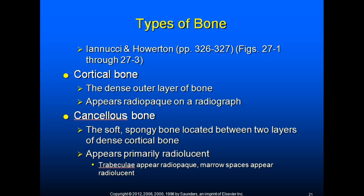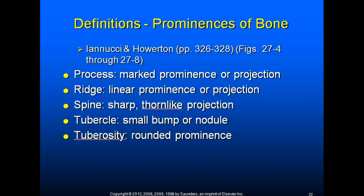The prominences of bone are referred to as: a process, which is a marked prominence or projection; a ridge, which is a linear prominence or projection; a spine, which is a sharp, thorn-like projection; a tubercle, which is a small bump or nodule; and a tuberosity, which is a rounded prominence.